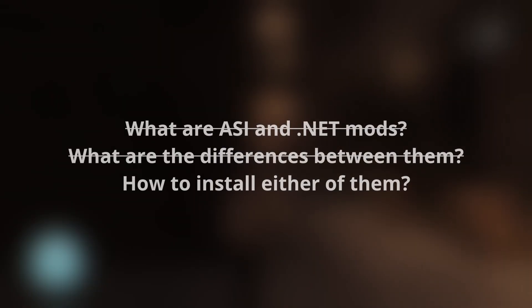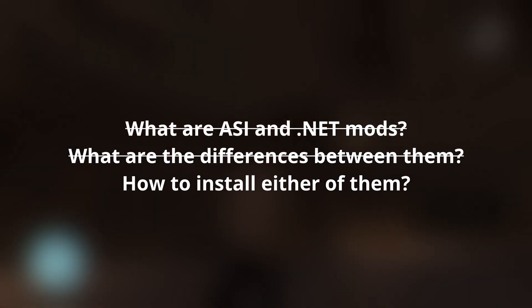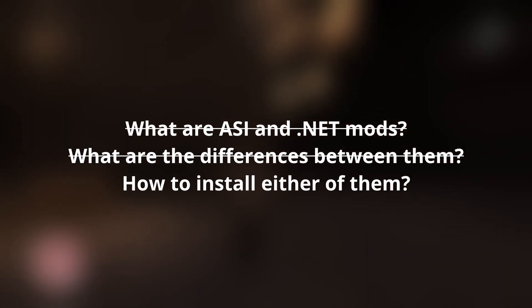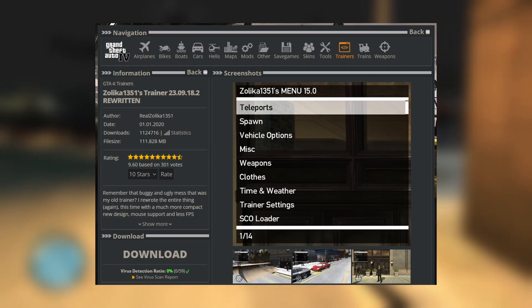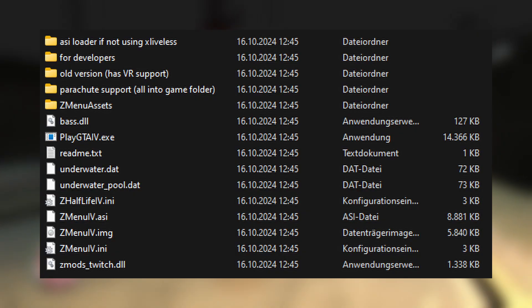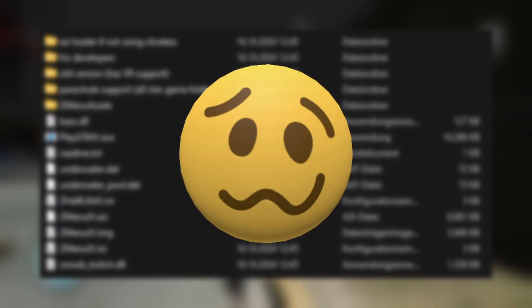So now we have talked about what ASI and .NET mods are, and what differences there are between them. Before I show you the installation process, please note that if a mod includes a readme file, you should read it first as the mod may have special requirements or want you to put certain things in different locations. We are starting off by showing you how to install ZMenu IV, as this mod has so much stuff in it, it could confuse some people.